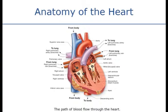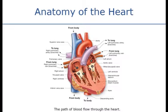When the right ventricle contracts, it pumps unoxygenated blood through the pulmonary arteries — this is the only part of the body where unoxygenated blood travels in an artery. Once the blood is oxygenated at the lungs, it comes back through the pulmonary veins, which is the only vein in the body where freshly oxygenated blood is carried.